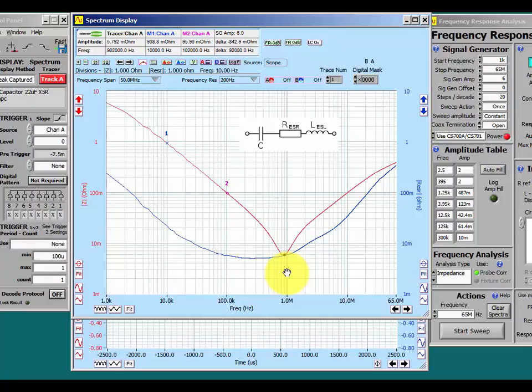The ESL impedance is going to be around nanohenry or so at this point. As the frequency increases the ESL dominates the impedance and the capacitor becomes a higher impedance. We can also place markers as you can see.